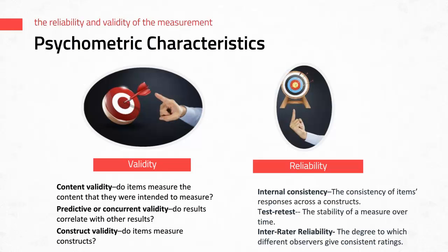There are two other types of reliability you often see reported. There's test-retest reliability — the stability of a measurement evaluated over time. For example, if a student takes the SAT on Wednesday and again on Friday, their scores should be similar. Then there's inter-rater or observer reliability, often seen for checklist or behavior observation type instruments. This is the degree to which different observers give a consistent rating.